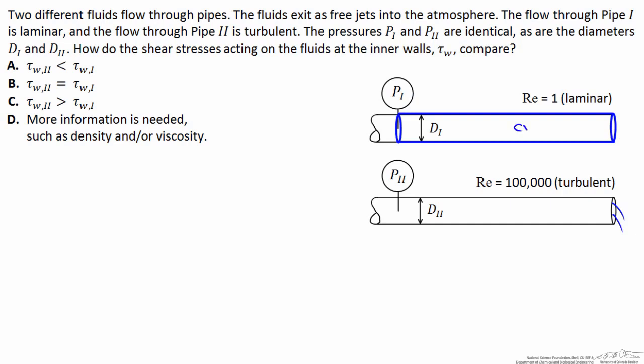To answer this question, I suggest that you draw two different control volumes for the two pipes. The control volumes are delineated by the location of P1 at the free jet, and the sides of the control volume are at the inner walls of the pipe.